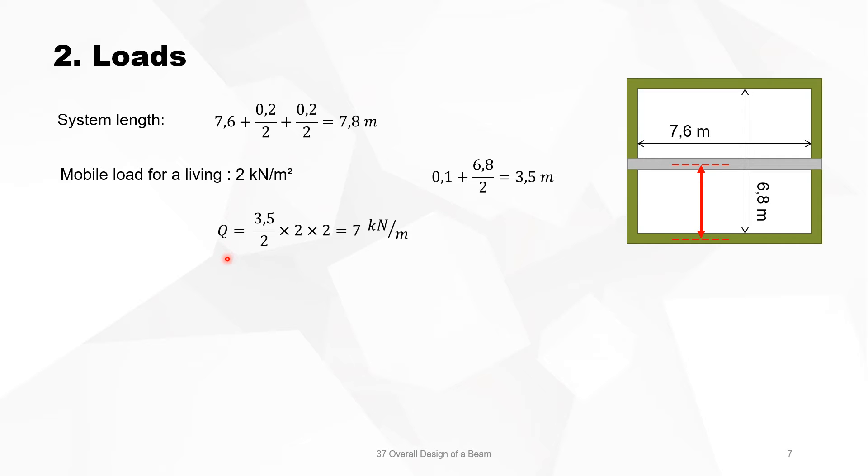So the total mobile load, we know it's a living room. So from the code, the mobile load of living is 2 kilonewton per square meter. So we have 3.5 meters divided by 2, so half is going there. But on the other side also the same is coming, so it's times 2, and times 2 kilonewton per square meter gives you 7 kilonewton per meter.